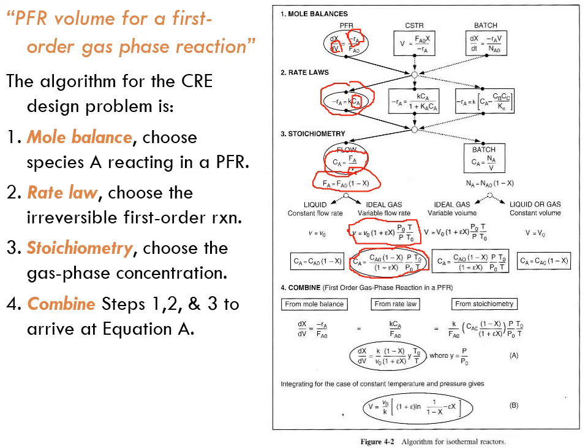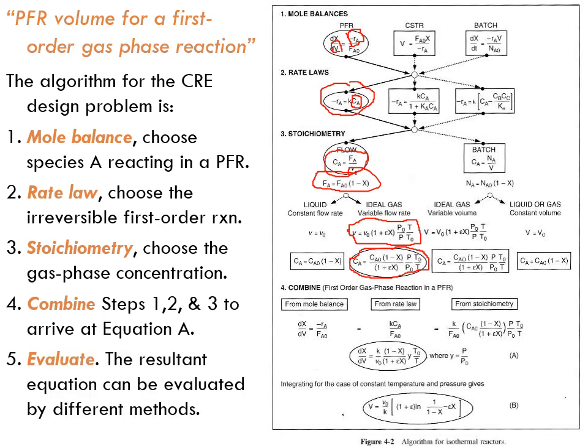Then we're going to combine all of the above. So we're going to substitute for CA and the rate law using this equation. And then we're going to substitute for minus RA with the resulting equation. So that's the combining step.